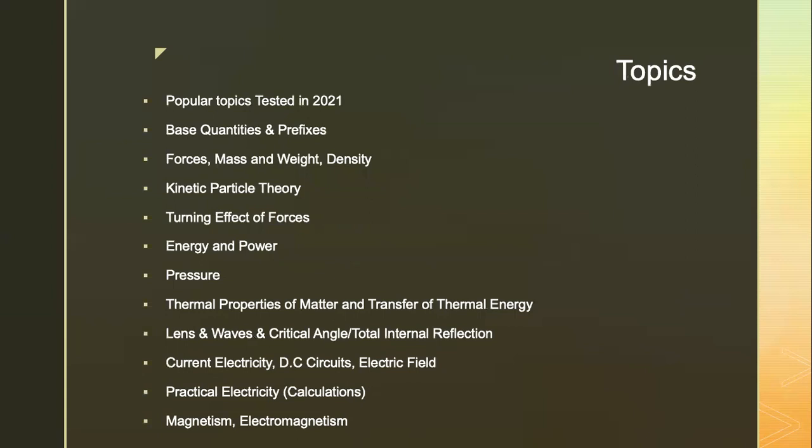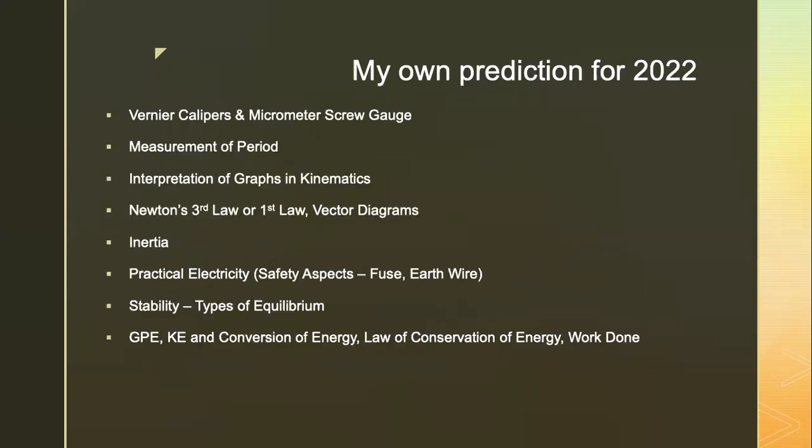So if we look back at what were tested in 2021, these are the popular topics: base quantities and prefixes. There were some questions that require students to do some conversion on units. So for example, gigajoule to joule, something like that. Please be careful, millimeter to meter. Students need to be very familiar with the conversion of units, which will be tested again every year without fail. Forces, mass and weight, density, kinetic particle theory, turning effects of forces, energy and power, pressure, thermal properties of matter and transfer of thermal energy, lens and waves, critical angle, total internal reflection, current electricity, DC circuit and electric field, practical electricity involving calculations, not so much on safety devices like fuse and earth wire, magnetism, electromagnetism.